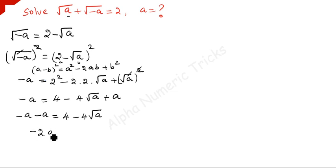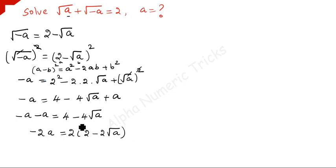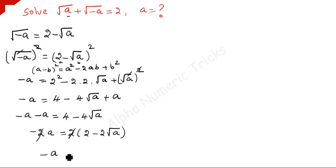2a occurs, so minus 2a equals 4 minus 4 square root of a. Take 2 as a common factor on the right: minus 2a equals 2 times (2 minus 2 square root of a). The 2s cancel, leaving minus a equals 2 minus 2 root a.